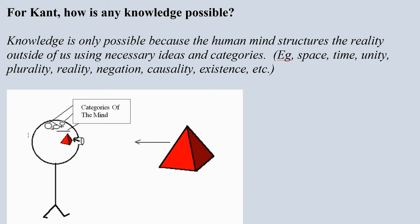A major conclusion that Kant comes up with in his earlier works, like the Critique of Pure Reason, is that knowledge only becomes possible for humans because the human mind structures the reality outside of us by using necessary ideas and categories.